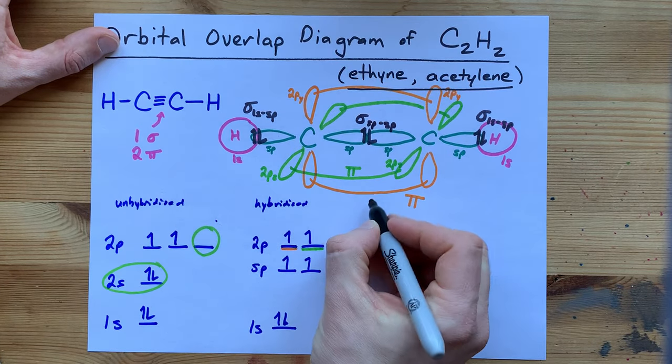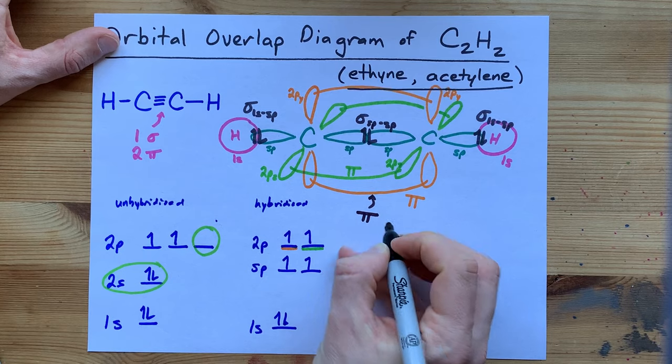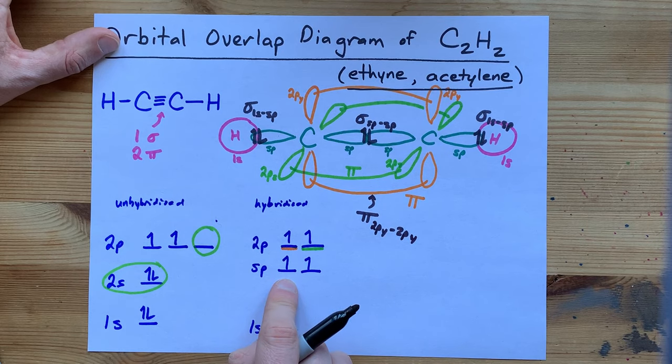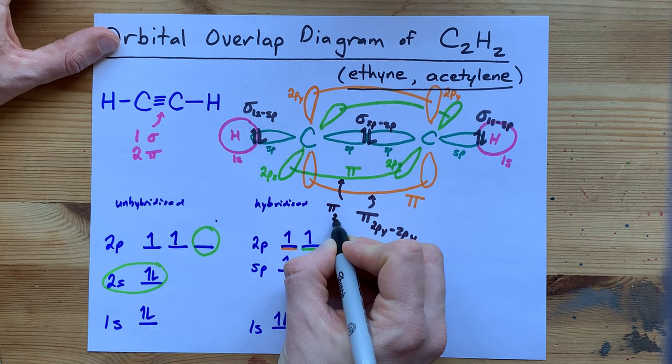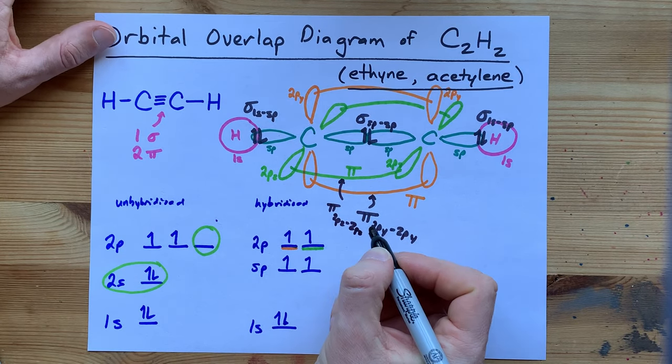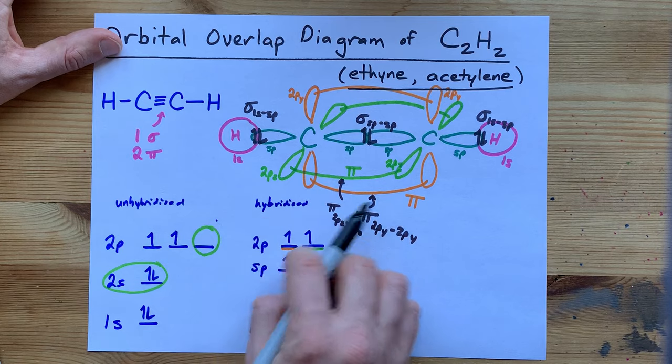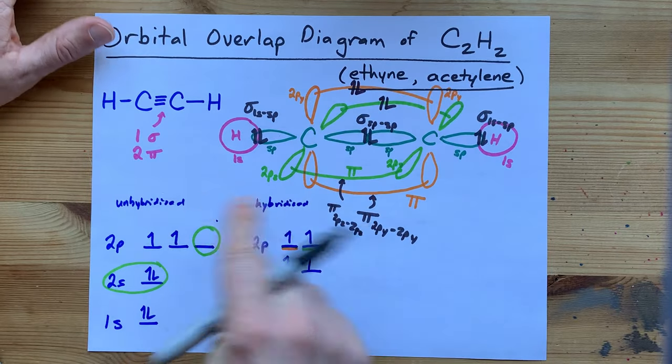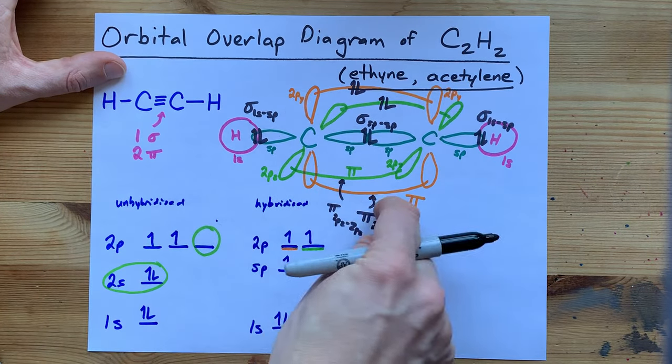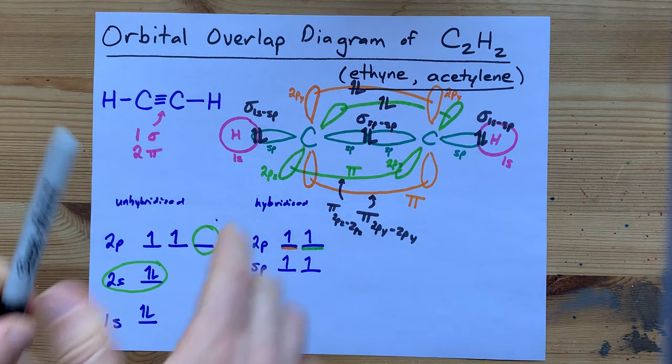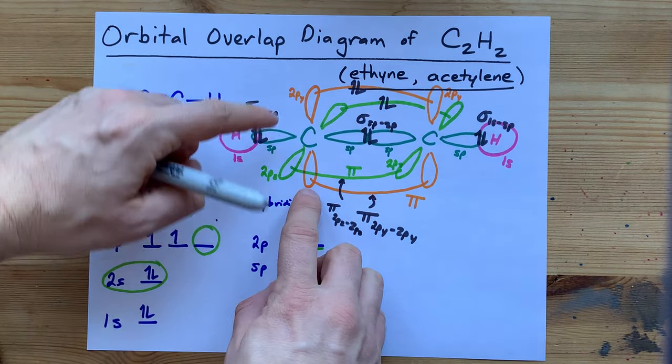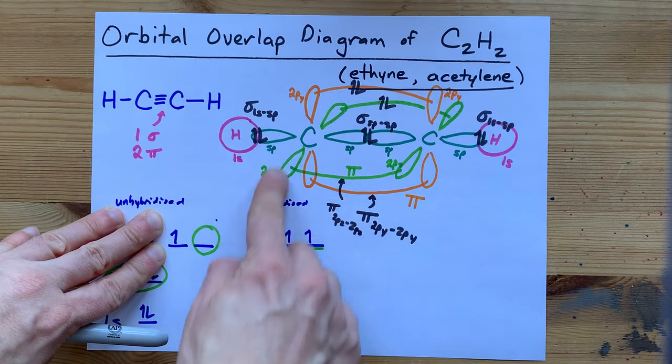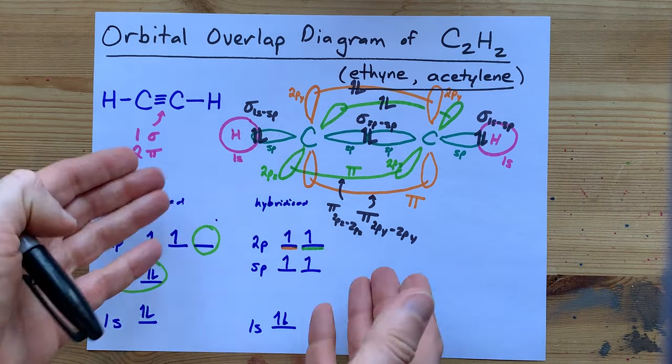This orange one, we've agreed, is a pi. It's between the 2py of each carbon. And the green here is another pi bond between the 2pz of each carbon. I'm not sure where you might draw the actual electrons to emphasize those. Perhaps you want to draw it there and there just to emphasize that this ring of orange holds two electrons. And I also want to re-emphasize that even though there are two lines connecting these two py's, the whole thing combined is a single extra bond.